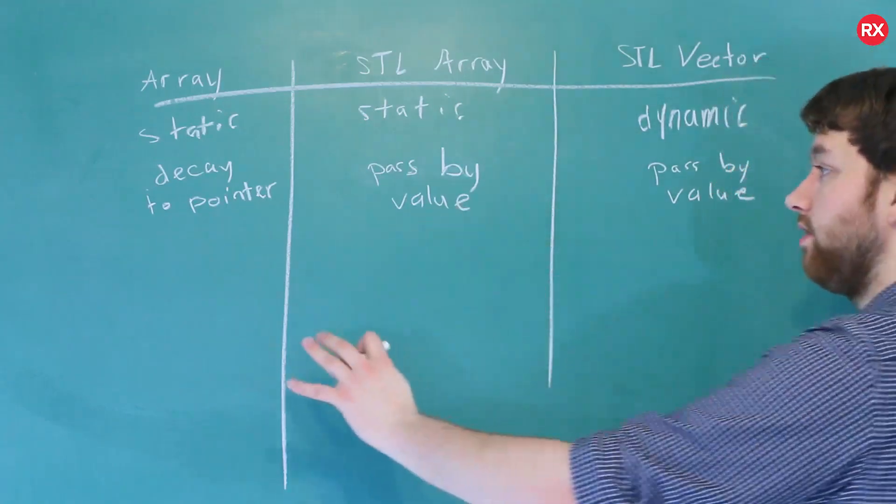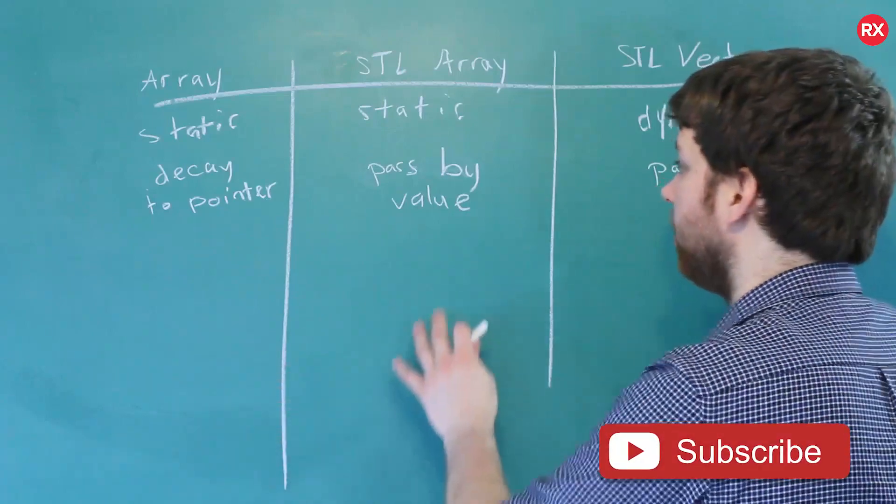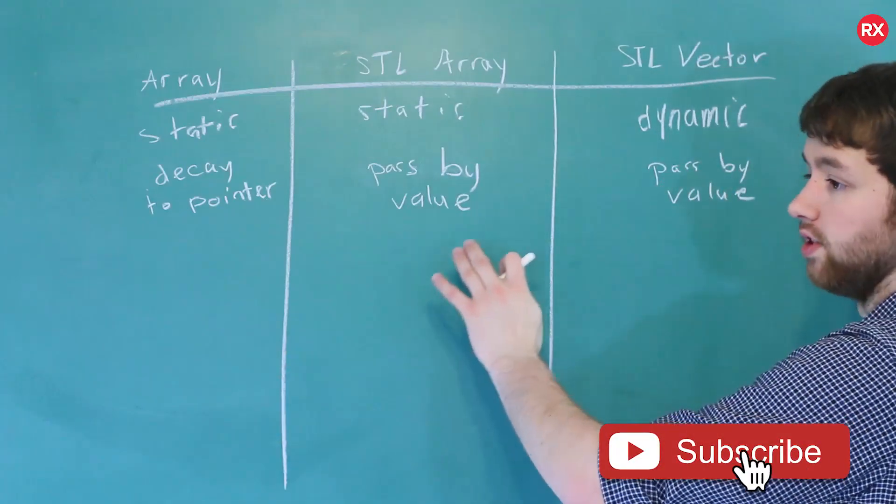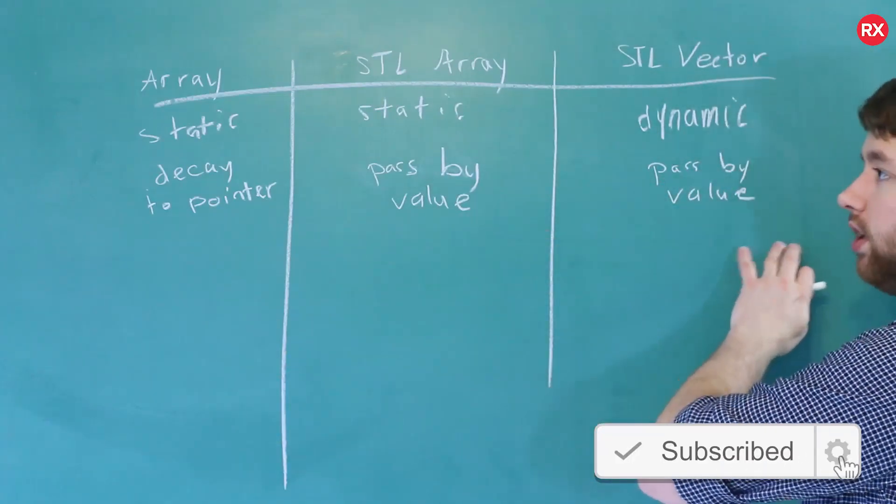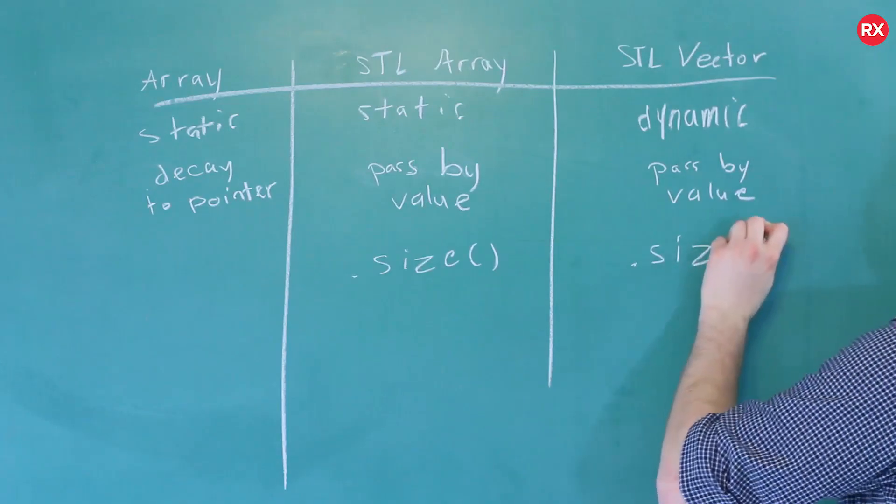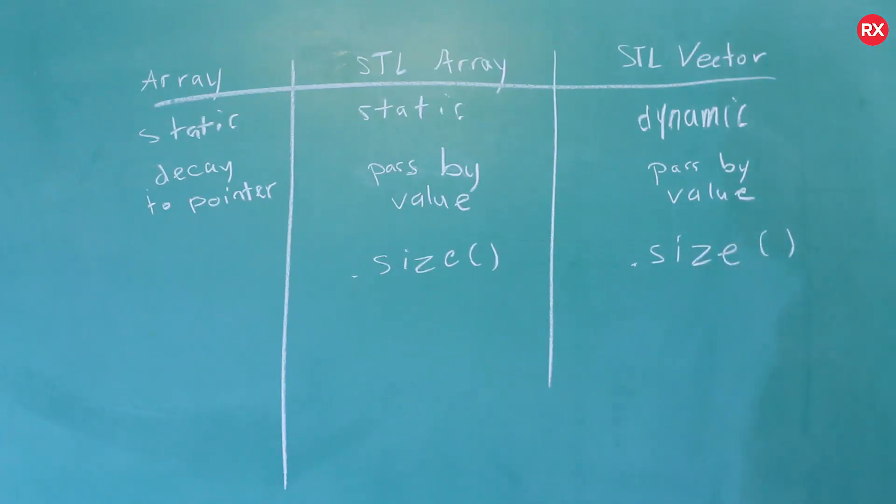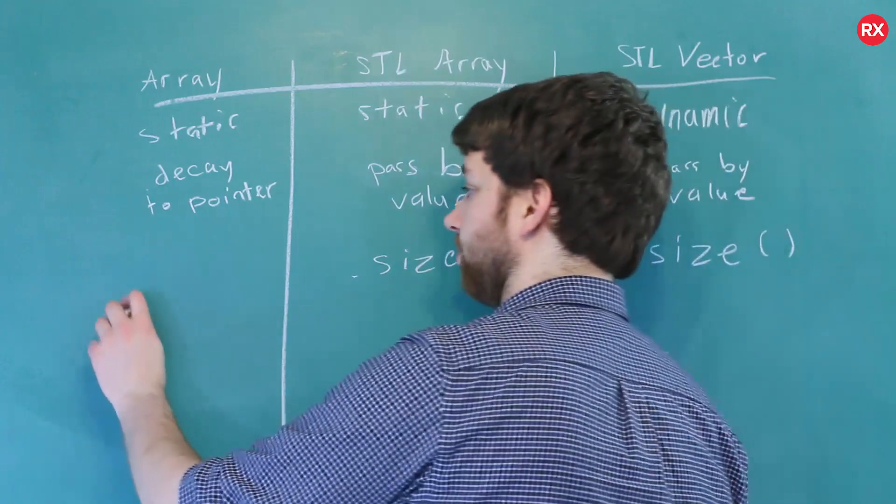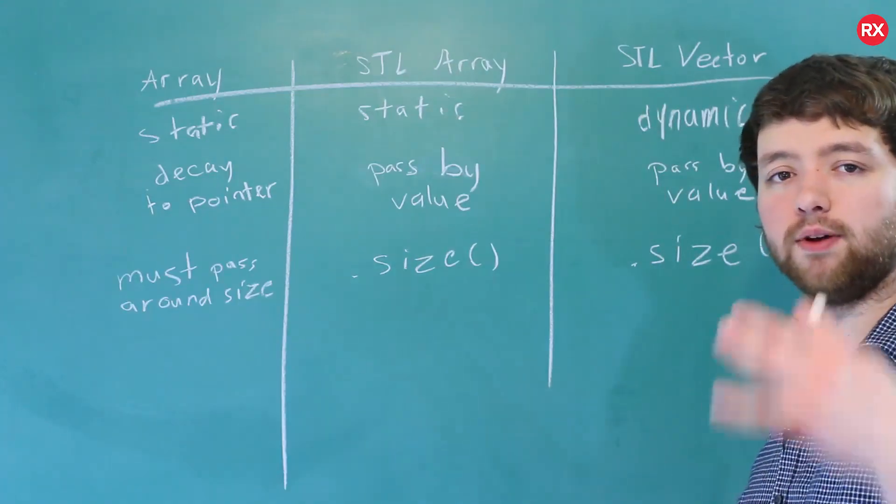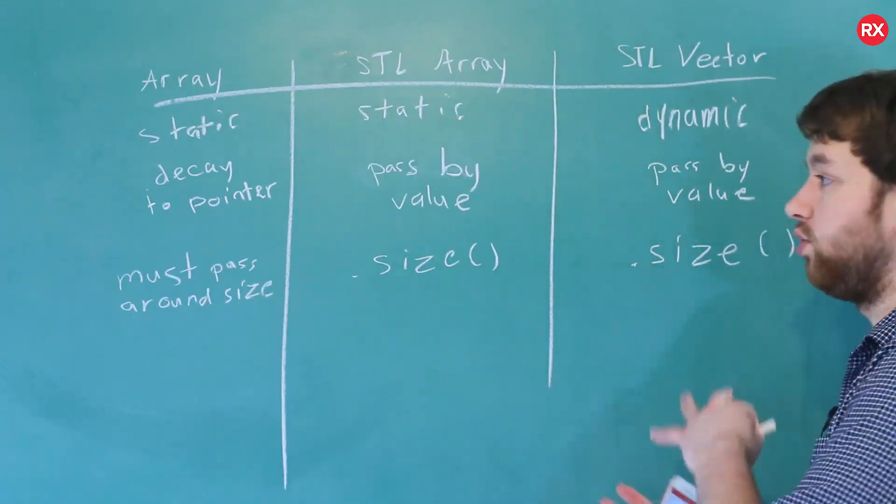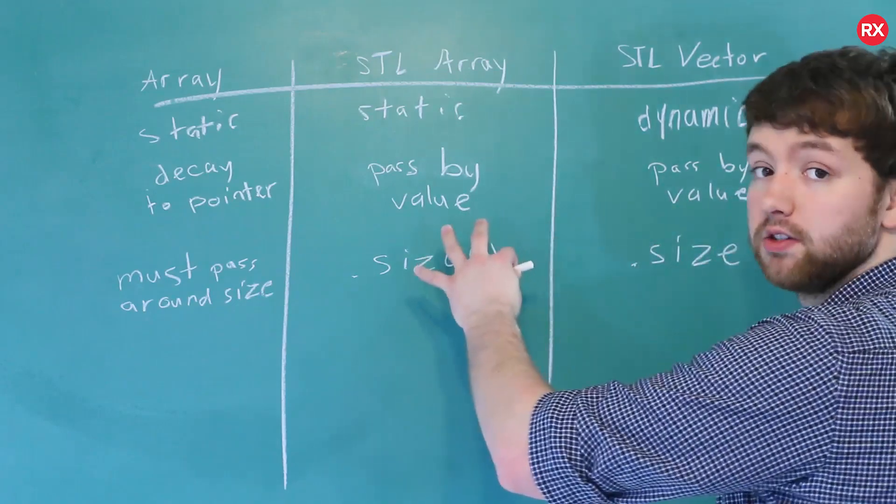So for arrays, they don't know their size when passed to a function. These will have the member functions dot size, which will allow you to get the size. So this will return the number of elements, which is nice to have. This does not have that option. And last thing on here is what we talked about first, is that you can assign them to different variables, specifically these two.